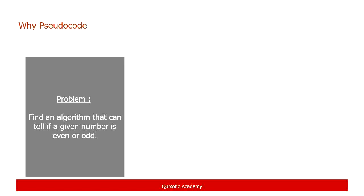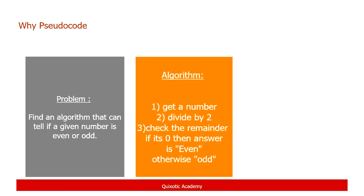We have to create an algorithm that can tell if a given number is even or odd. A simple algorithm looks like: get a number, divide it by two, and check the remainder. If the remainder is zero then the number is even; if the remainder is not zero then the number is odd. Print the answer and the program finishes.